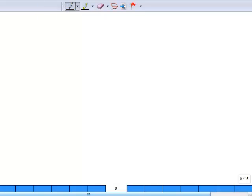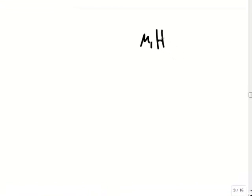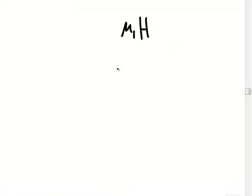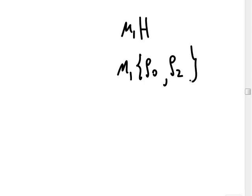A little bit of revision. mu1H — remember, mu1H actually consists of rho0 and rho2. So mu1H is actually mu1·rho0 and mu1·rho2.